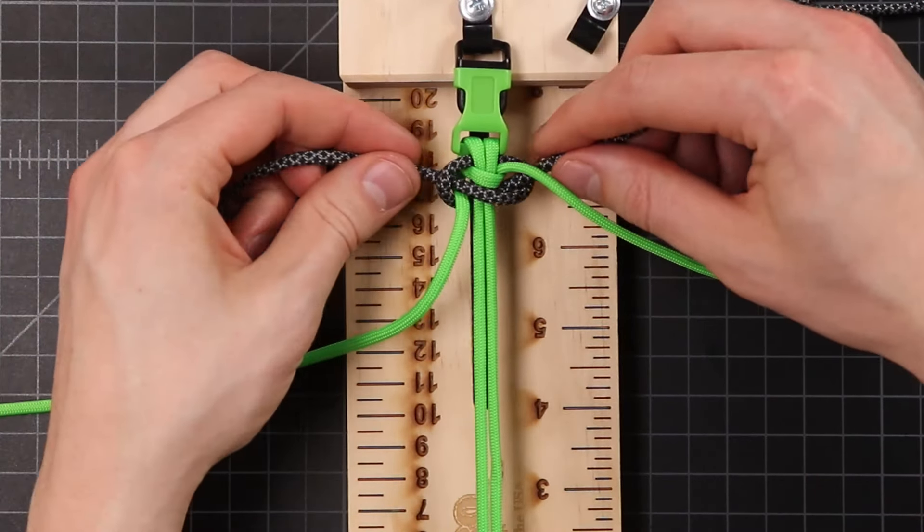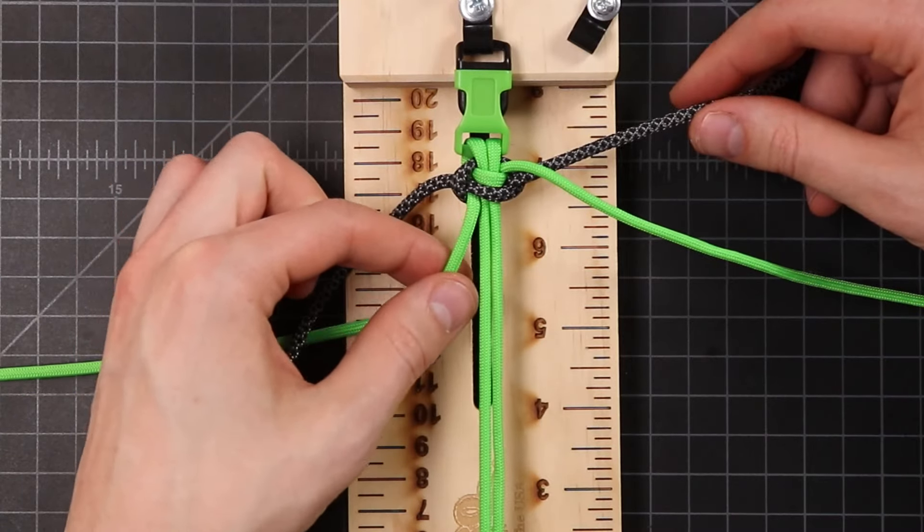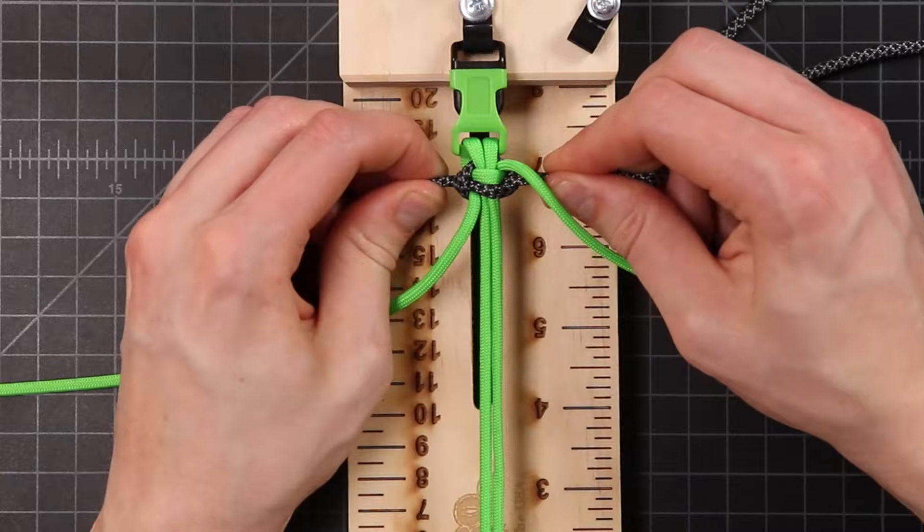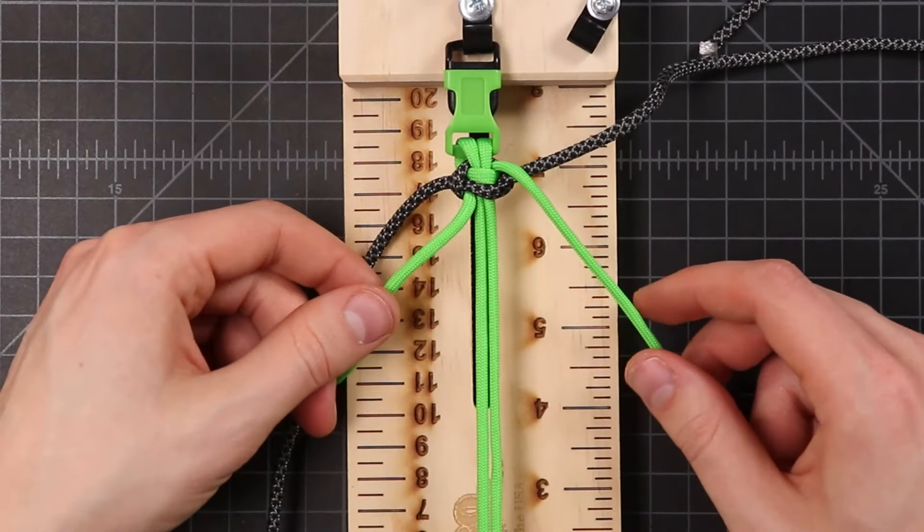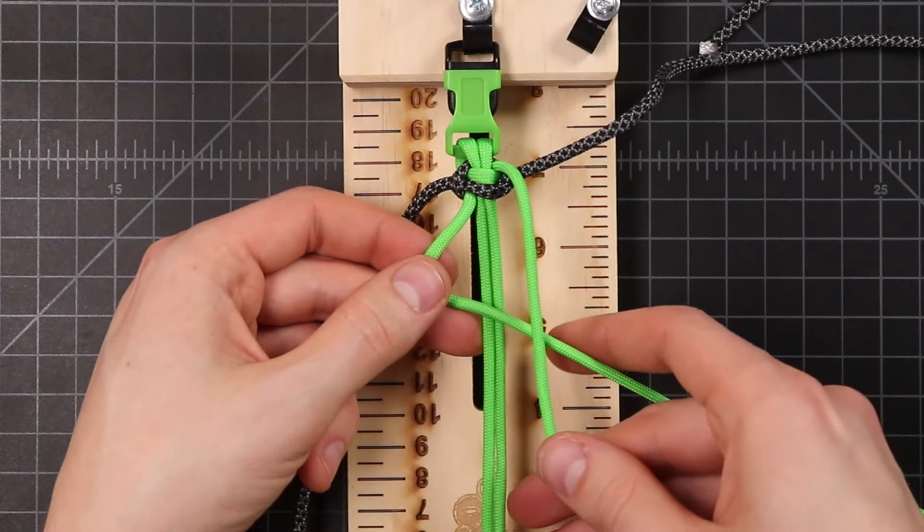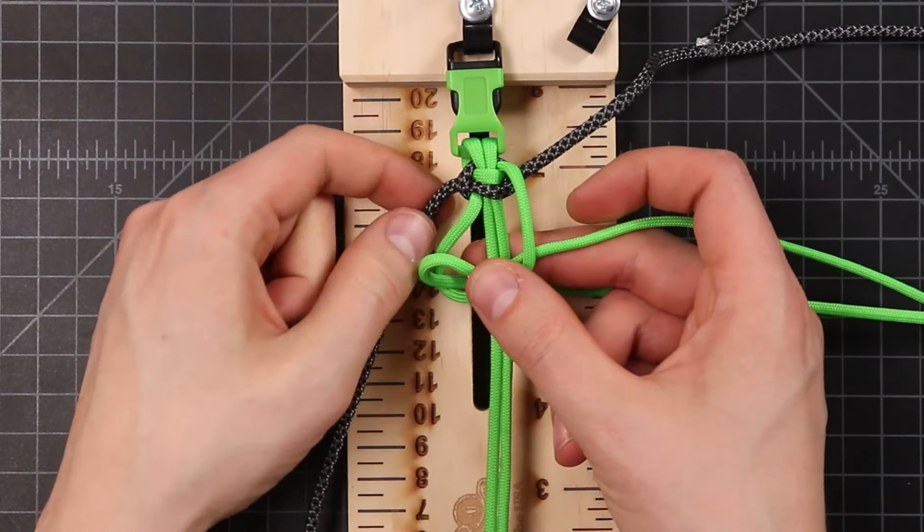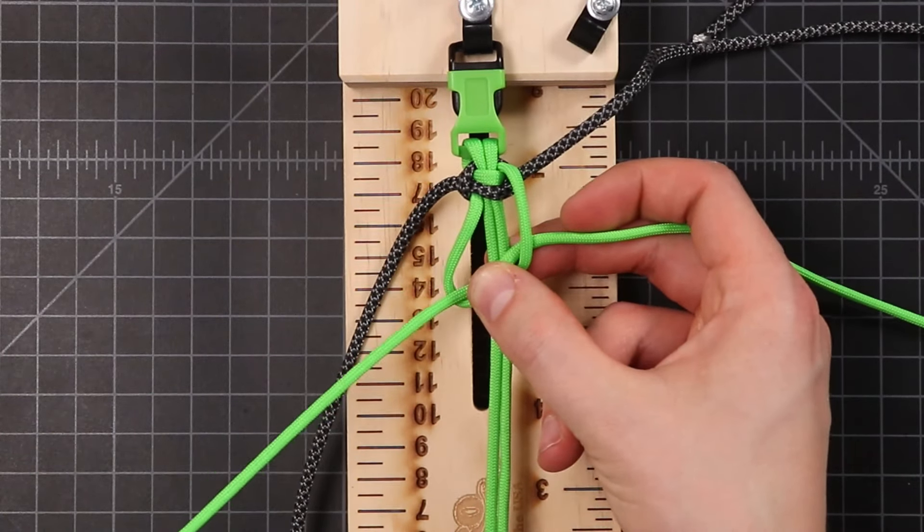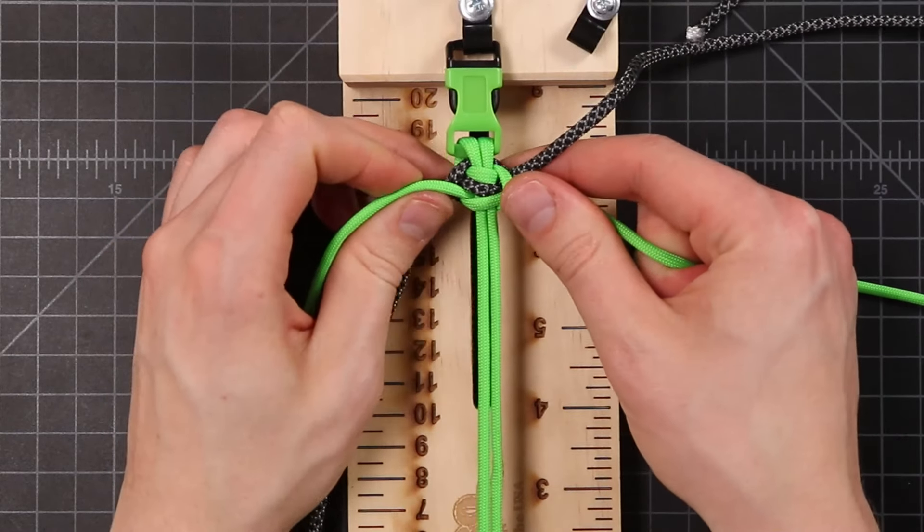So once you cinch that one down, it should look like this. With this green cord coming out the bottom, and this one kind of sticking up over the top. Make sure those are up nice and tight. And then we're going to switch sides starting with our green. So that left side cord is going to go over the top, that one down and around, and we're not going to include any of the black cords in that knot.